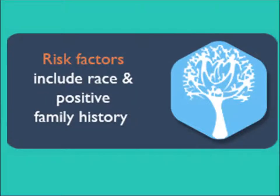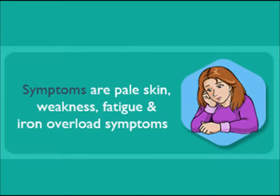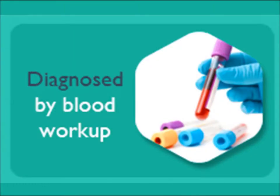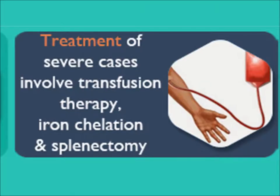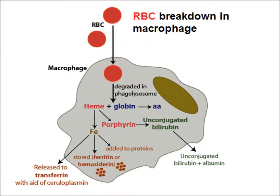Risk factors include race and positive family history. The patient presents with symptoms of anemia, easy fatigability, pale skin, weakness, and iron overload symptoms. Diagnosis is by blood workup. Treatment in severe cases includes multiple transfusions, iron chelation therapy, and splenectomy.